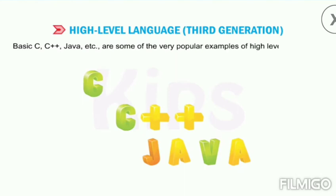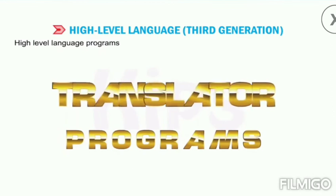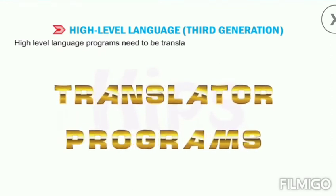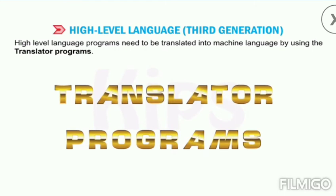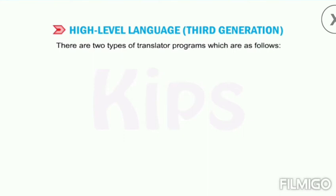Basic, C, C++, Java, etc. are some of the very popular examples of high-level languages. High-level language programs need to be translated into machine language using translator programs. There are two types of translator programs.